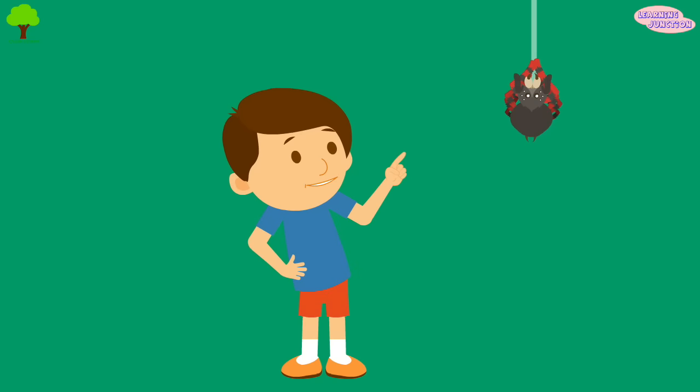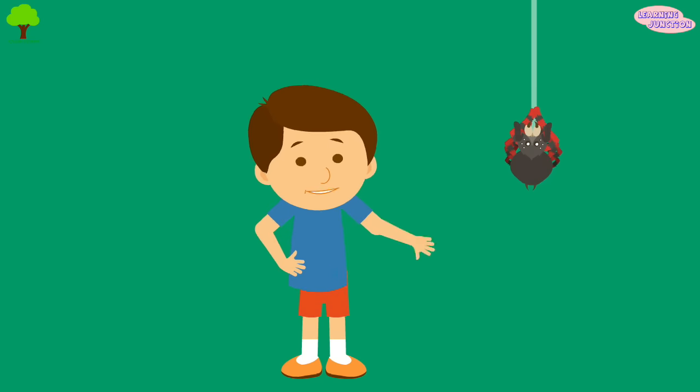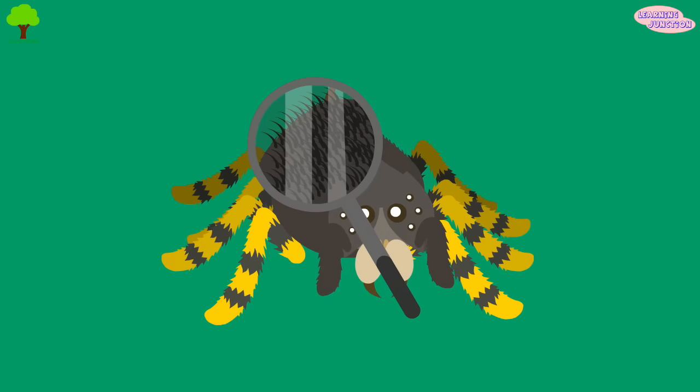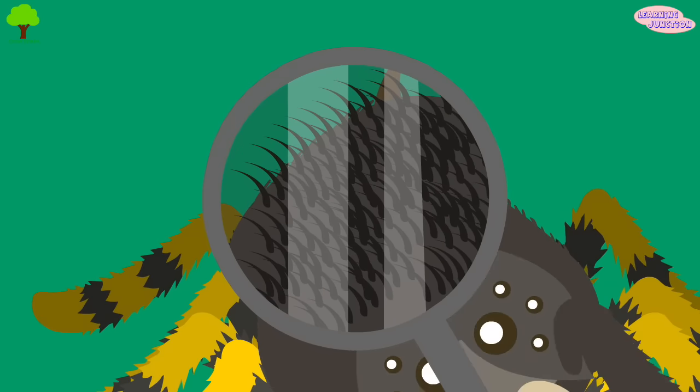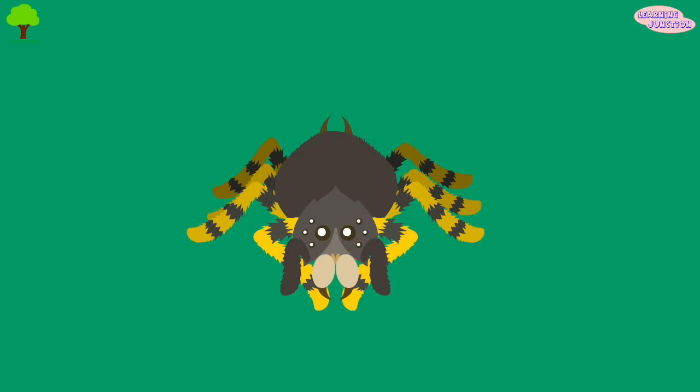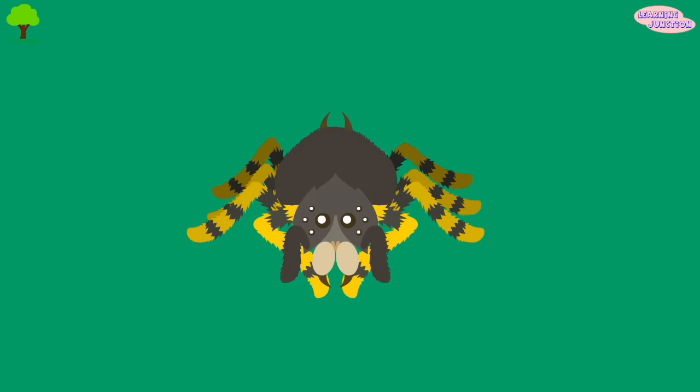All tarantulas have a fun way of defending themselves from enemies. They have hairs on their body that have pointed little pokey things on them. When threatened, they rub these edged hairs with their legs and shoot them at their predators.